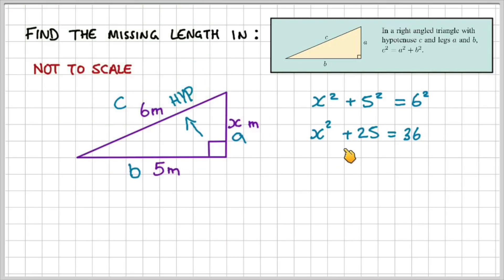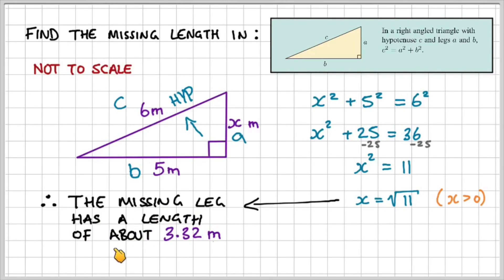So then we can have X² + 25 = 36. If we rearrange this and minus 25 from both sides, X² = 11. And so therefore, X is equal to the square root of 11. Now remember, X would be greater than zero because it's a positive value. So we only take the positive square root of the number. Therefore, the missing leg has a length of about 3.32 meters.